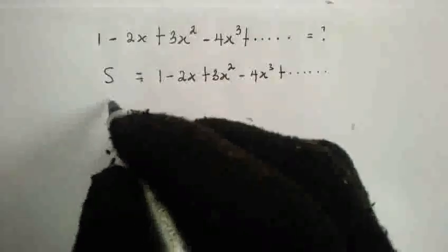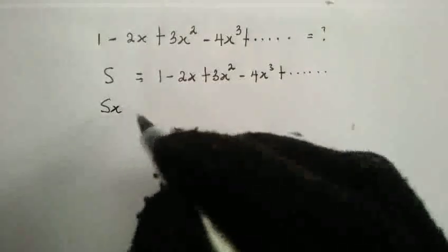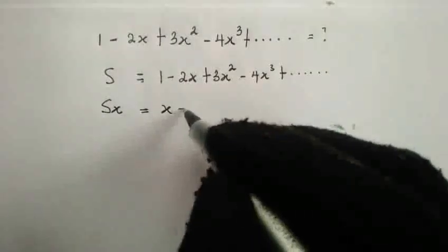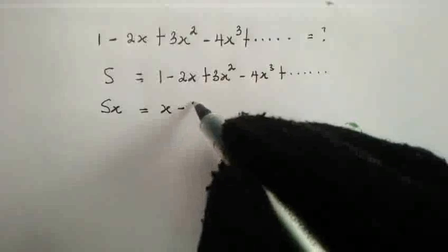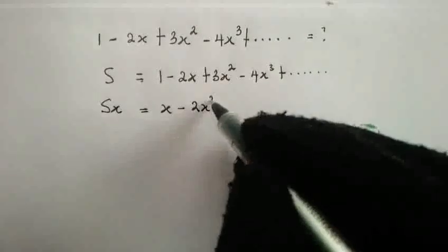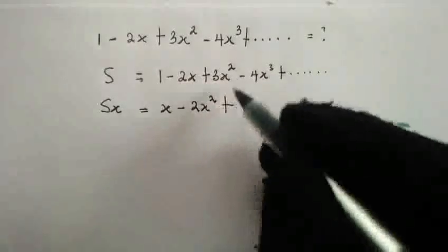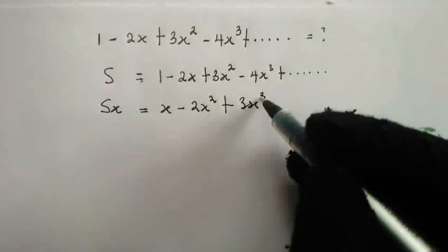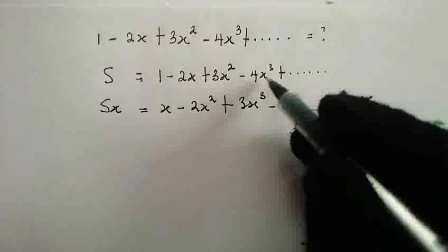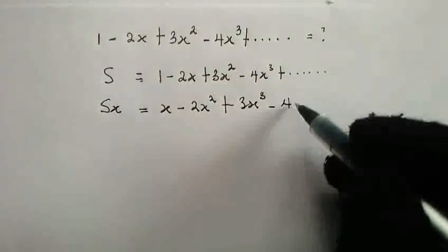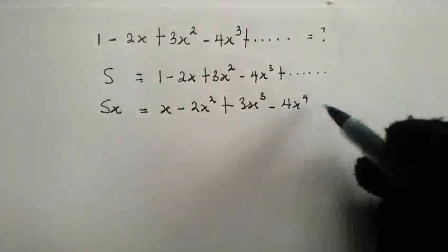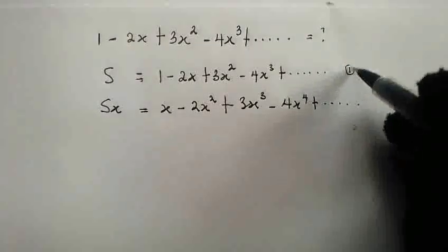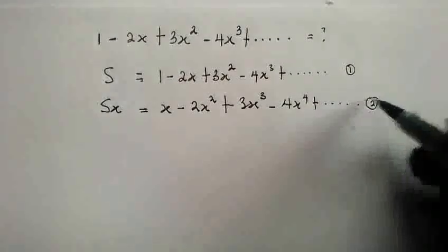So, I have Sx equals, 1 times x is x minus 2x times x is 2x squared plus 3x squared times x is 3x cubed minus 4x cubed times x is 4x raised by 4 plus and so on. This is my equation 1 and this is my equation 2.